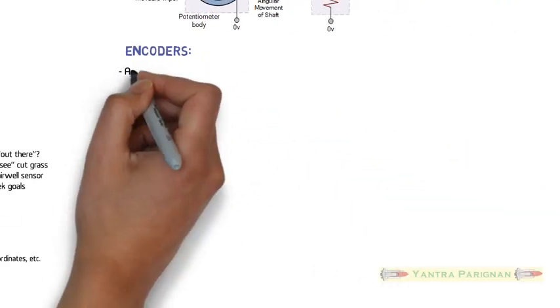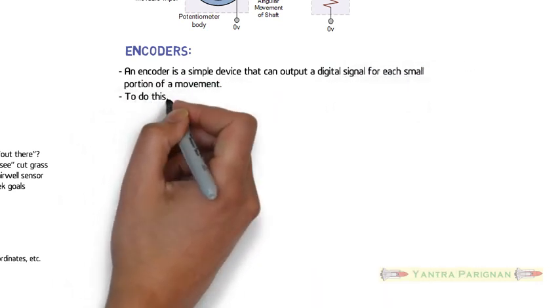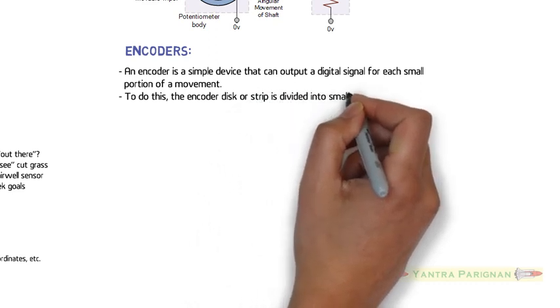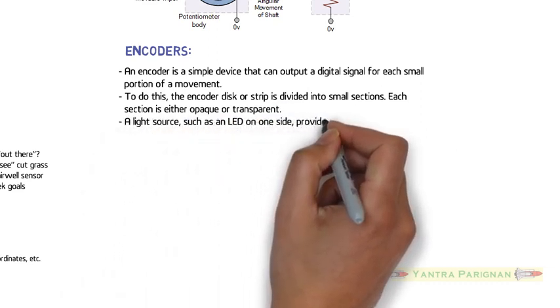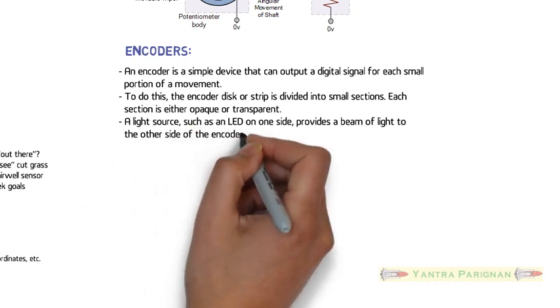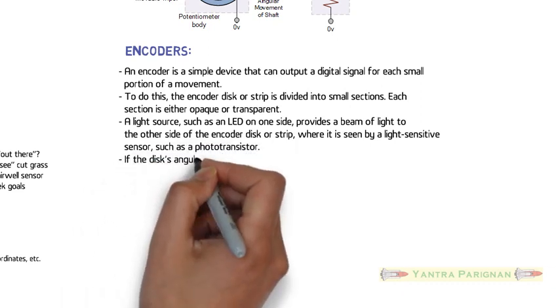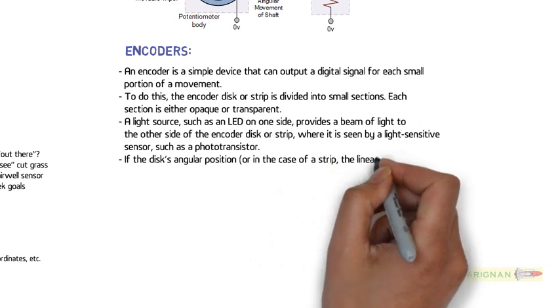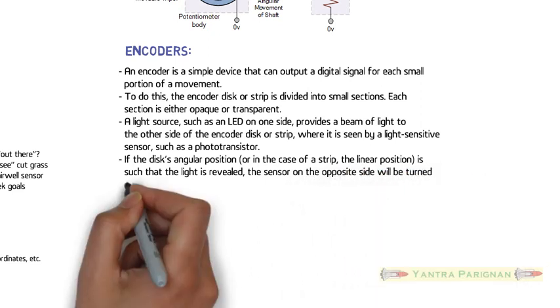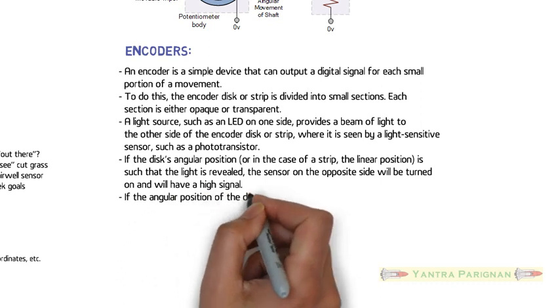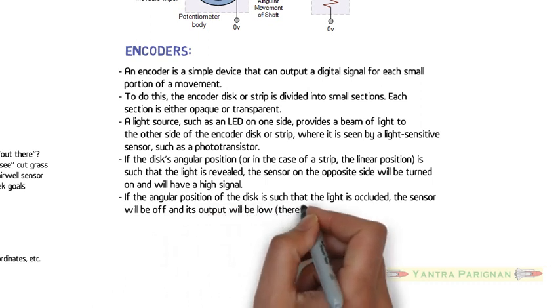Encoders. An encoder is a simple device that can output a digital signal for each small portion of a movement. To do this, the encoder disk or strip is divided into small sections. Each section is either opaque or transparent. A light source, such as an LED on one side, provides a beam of light to the other side of the encoder disk or strip, where it is seen by a light-sensitive sensor such as a phototransistor. If the disk's angular position, or in the case of a strip, the linear position, is such that the light is revealed, the sensor on the opposite side will be turned on and will have a high signal. If the angular position of the disk is such that the light is occluded, the sensor will be off and its output will be low, therefore, a digital output.